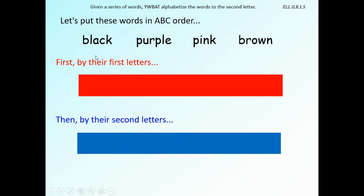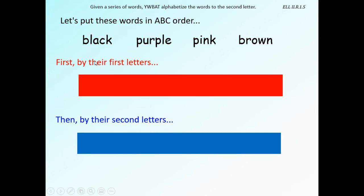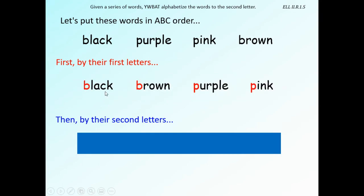Let's put these words in ABC order, first by their first letters. We have black, purple, pink, and brown. The B words go first and the P words go second. Looking at the first letters: B, B, P, P. Now we're going to look at the second letters. The second letter of 'black' is L; the second letter of 'brown' is R.